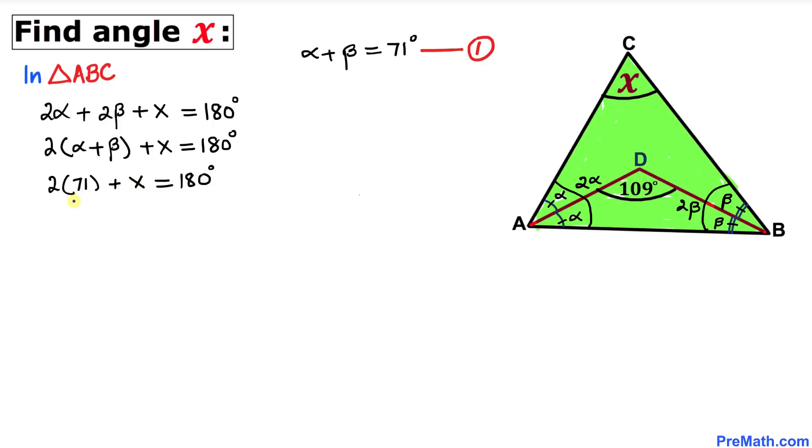2 times 71 equals 142 degrees, so 142 degrees plus X equals 180 degrees. Now let's solve for X. I'm going to subtract 142 degrees from both sides. On the left side they cancel out, so angle X equals 180 degrees minus 142, which gives us 38 degrees.